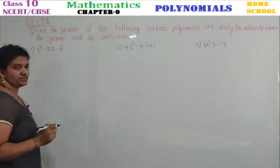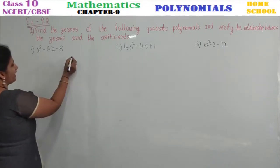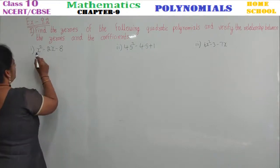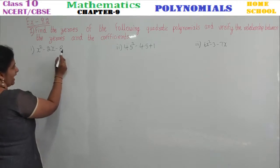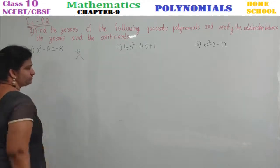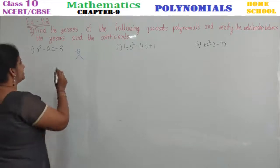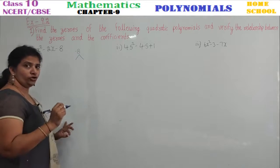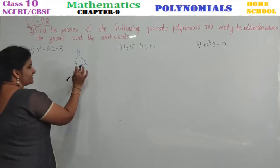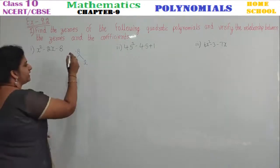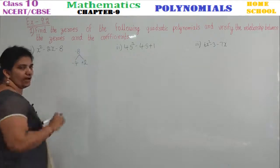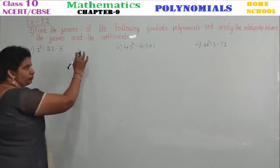The first polynomial is x² - 2x - 8. To find zeros, we need to factorize the polynomial. Multiply the leading coefficient and the constant: 1 into -8 gives -8. Now find factors of -8 that add up to -2. Since 4 × 2 = 8, take -4 and +2: minus 4 plus 2 is minus 2, and when you multiply, minus into plus gives minus 8. So -4 and +2 are the split terms.